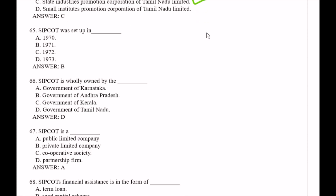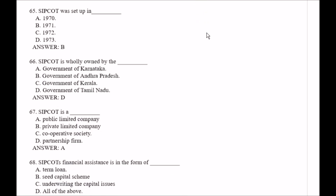Question number 65: SIPCOT was set up in — Option A, 1970; Option B, 1971; Option C, 1972; Option D, 1973. The right answer is Option A, that is 1970.